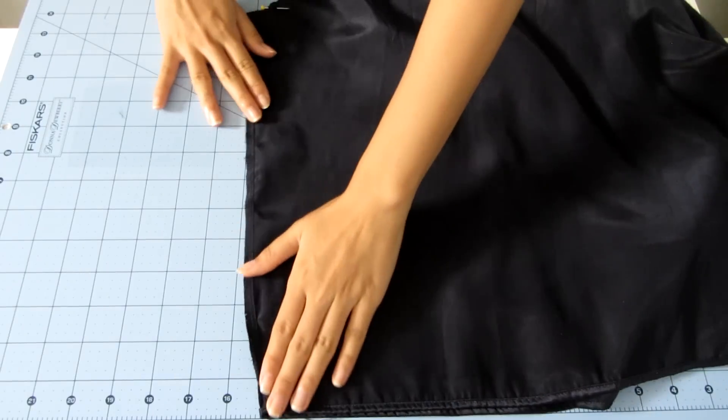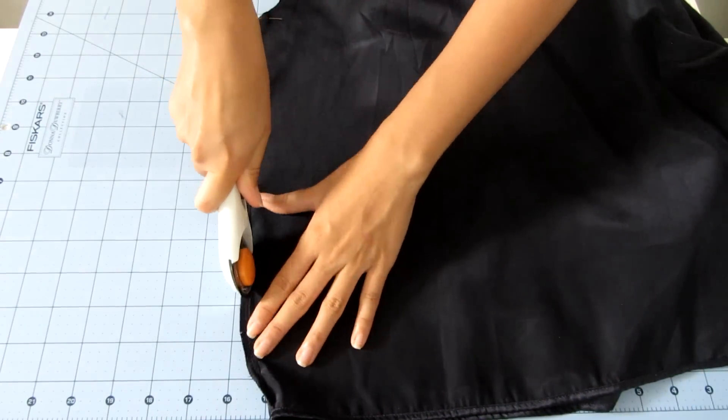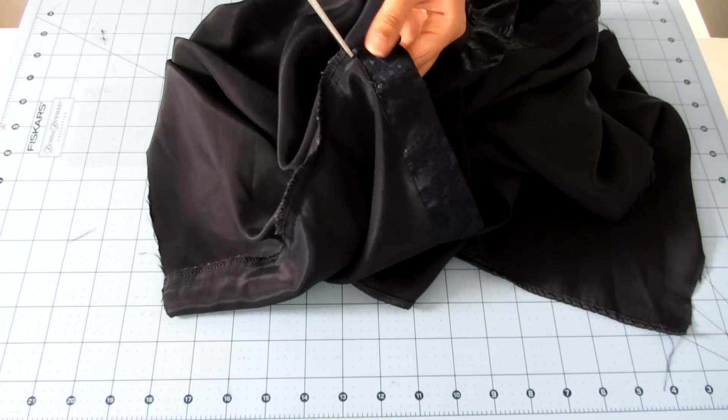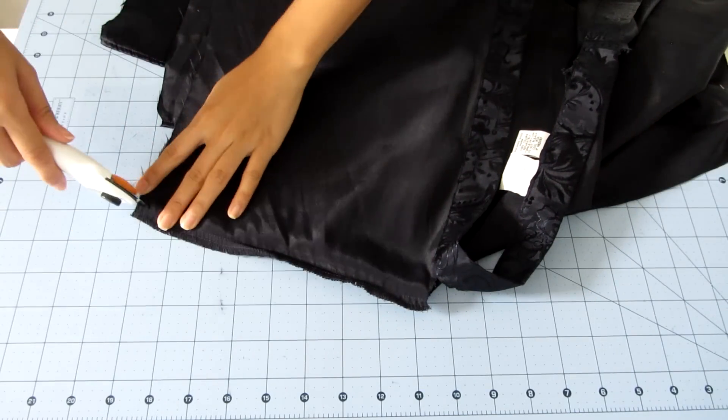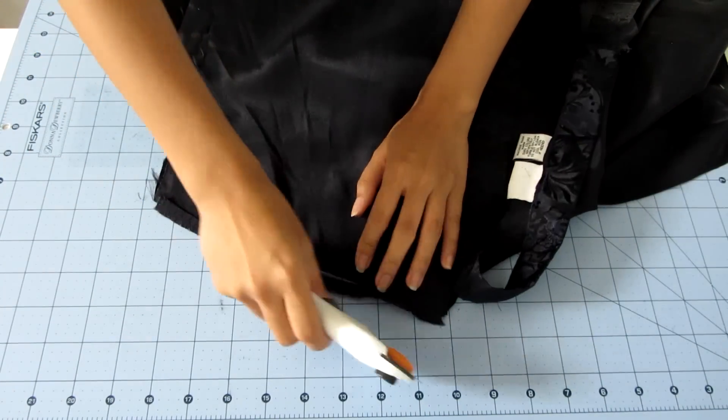I decided to add a facing to my top, so I took the pajama top again and cut off the side and shoulder seams. Then I cut around the neckband and I used the front of the shirt for the facing.